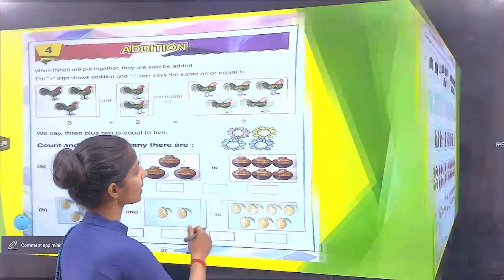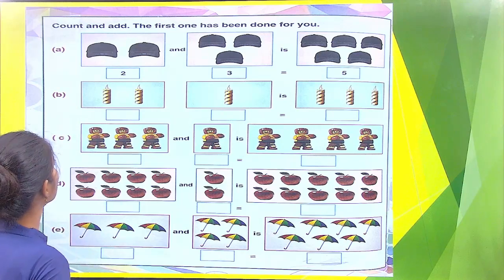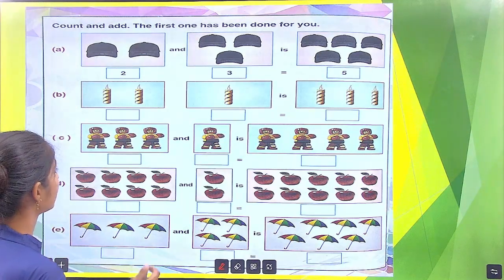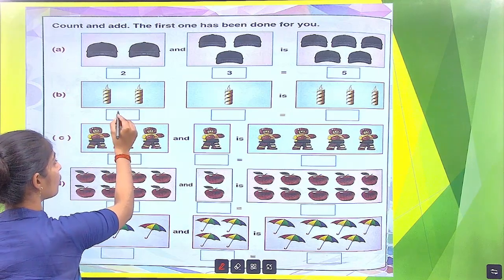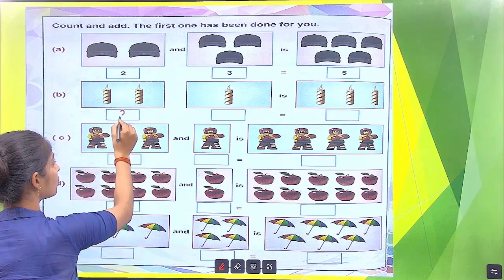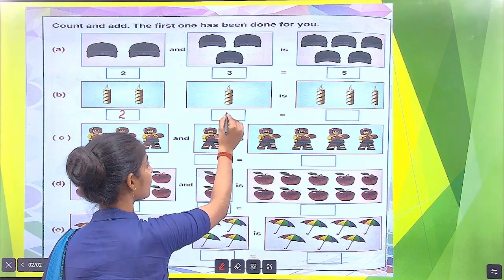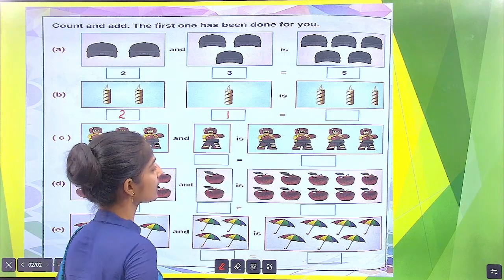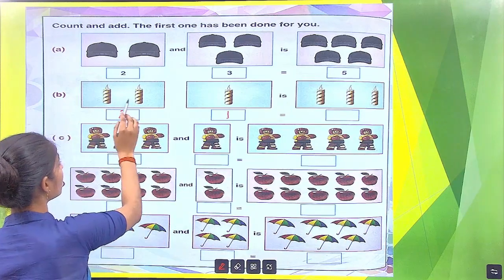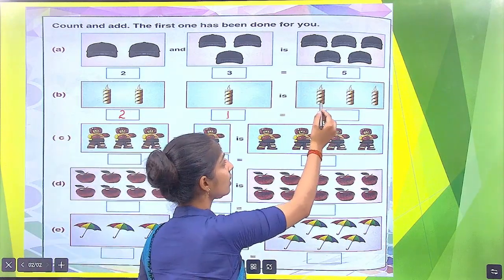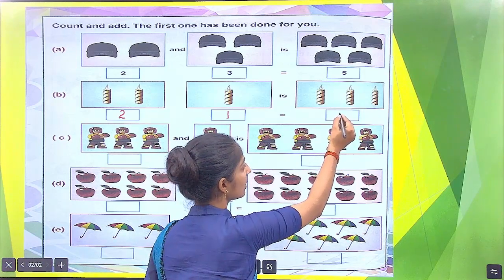Open your next page. Count and add. How many candles in this box? There are 2: 1, 2. We put here 2. In the next box, there is 1 candle. We put here 1. Is equal to how many total candles? We count 1, 2, 3. So we put here 3.